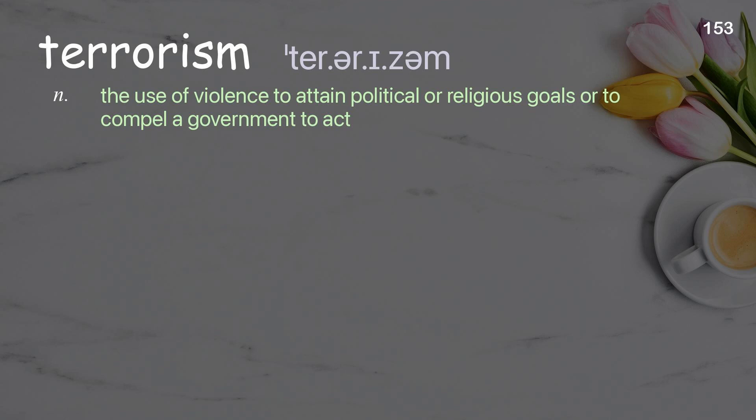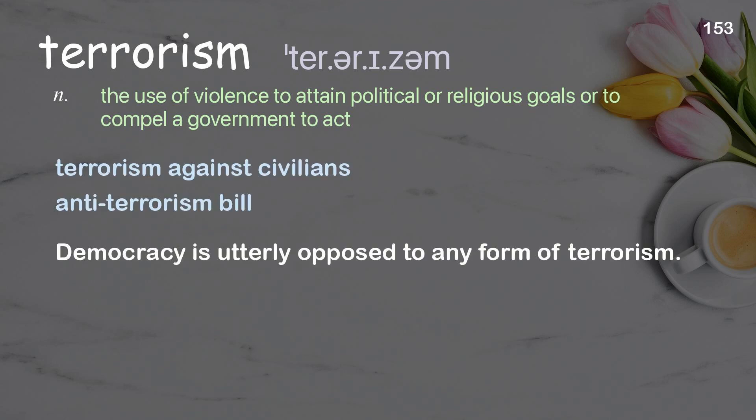Terrorism: the use of violence to attain political or religious goals or to compel a government to act. Examples: terrorism against civilians; anti-terrorism bill. Democracy is utterly opposed to any form of terrorism.